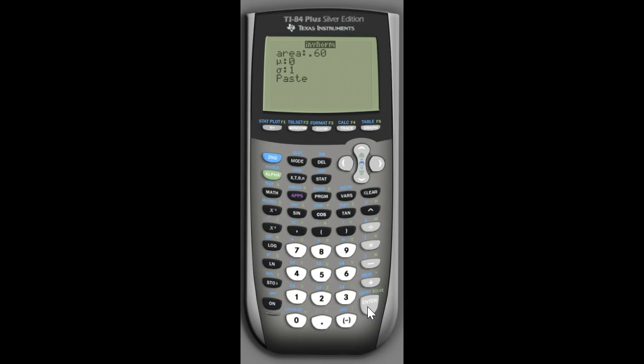So my mean is zero. My standard deviation is one. I hit paste. I hit enter. And there is this number 0.253347. Now, it looks like I should be using 0.2533.